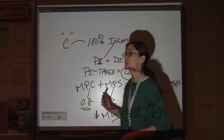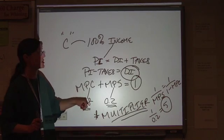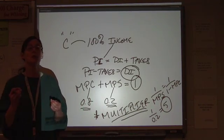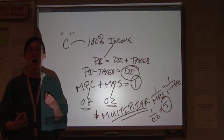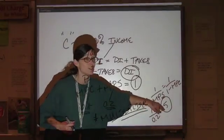So if this is your typical consumer, with an MPC of 0.8, an MPS of 0.2, and the government gives us a $1 billion tax break, it should result in $5 billion of spending.